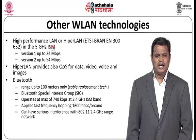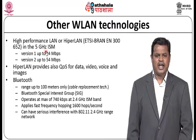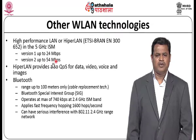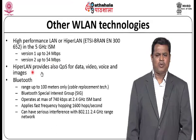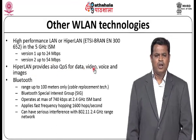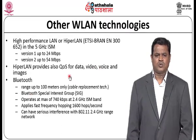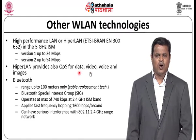Some other wireless LAN technologies are also available. High Performance LAN or HiperLAN operates in the 5 GHz ISM band — version 1 supports up to 24 Mbps and version 2 supports up to 54 Mbps. HiperLAN also provides quality of service (QoS) for a variety of data features like video, voice, and images.